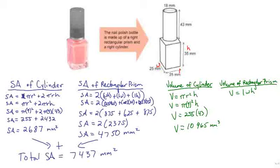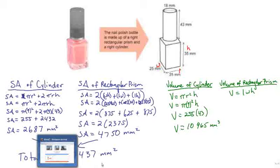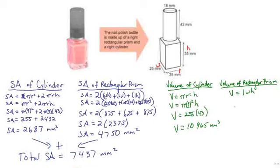Finally, the volume of the rectangular prism is simply V = length × width × height. Substituting the values gives us 25 × 25 × 35, which equals 21,875 mm³. Our units are cubed.